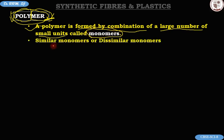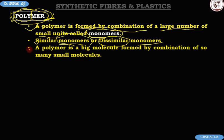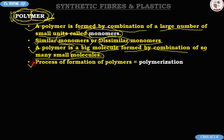These monomers could be similar — that is, the same type — or they could be dissimilar, meaning different types of monomers. In other words, a polymer is a big molecule formed by the combination of many small molecules. The process of formation of polymers from monomers is known as polymerization. Please remember this sentence — it's very important.